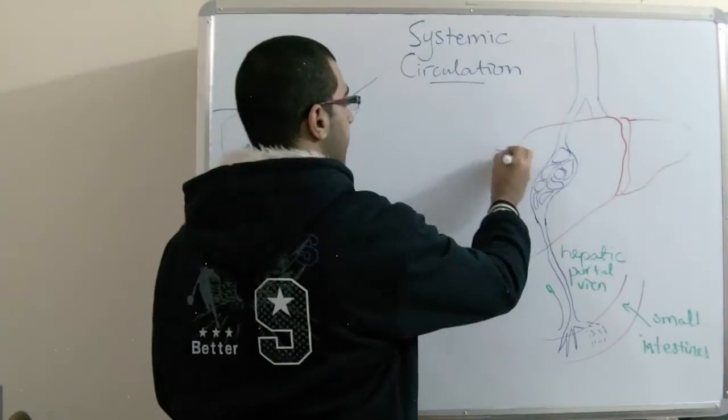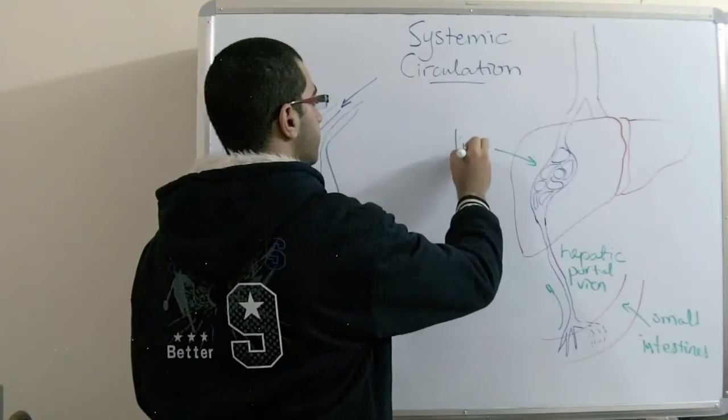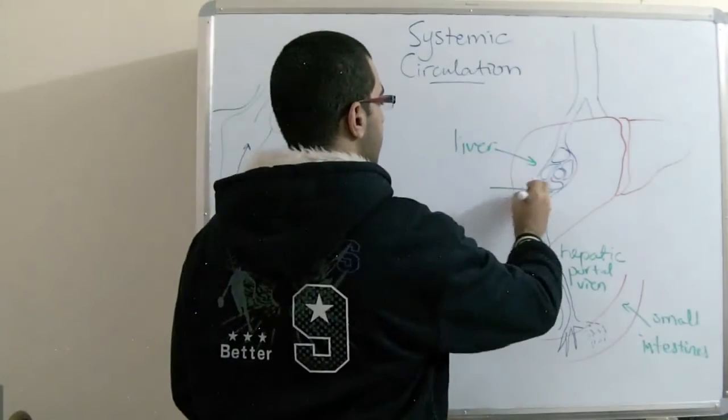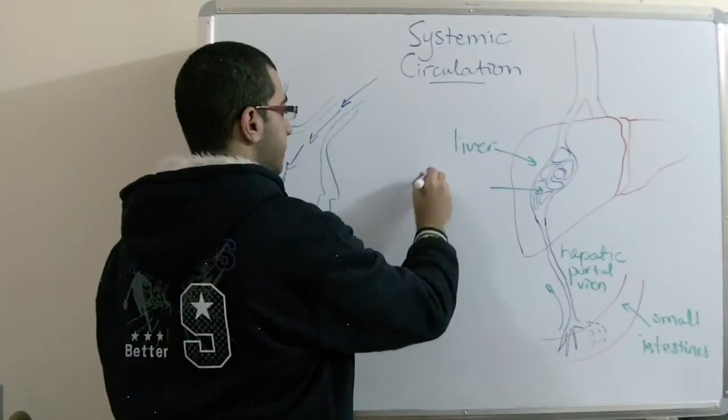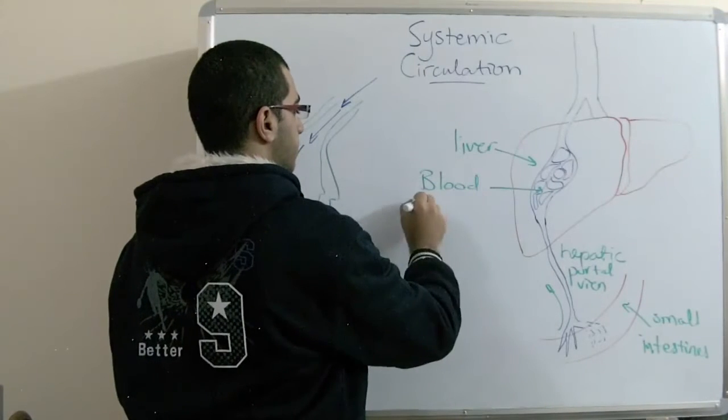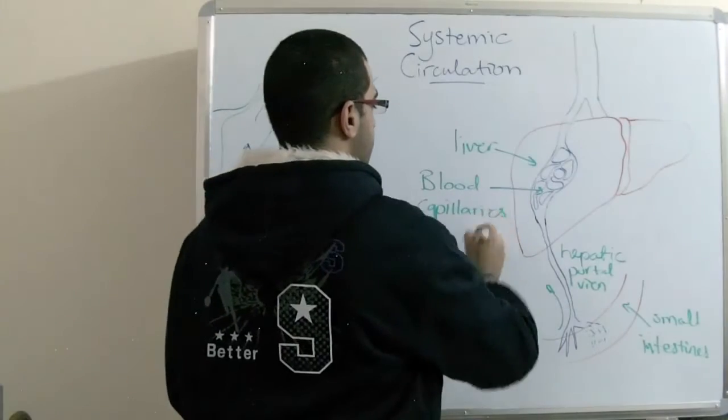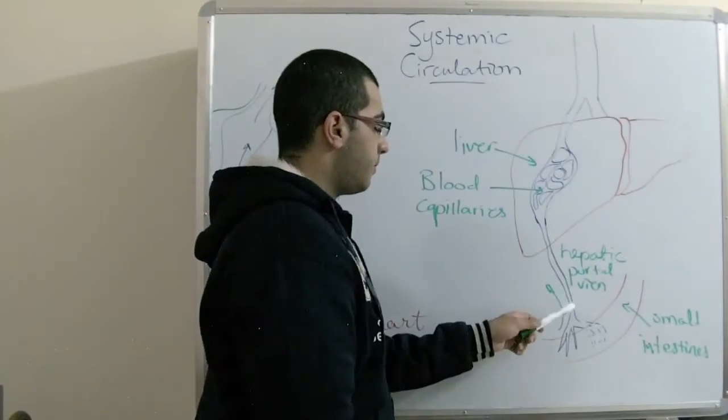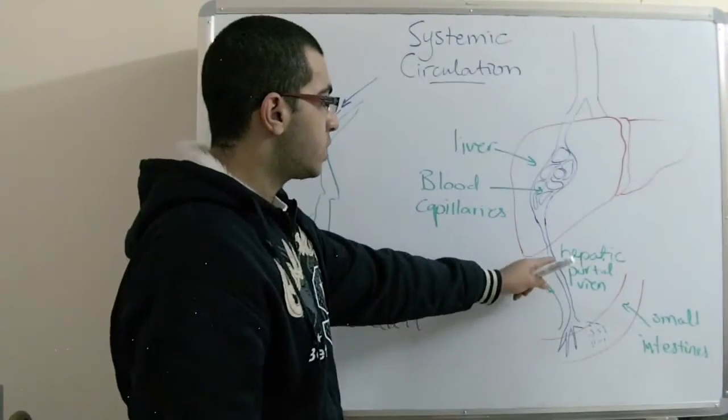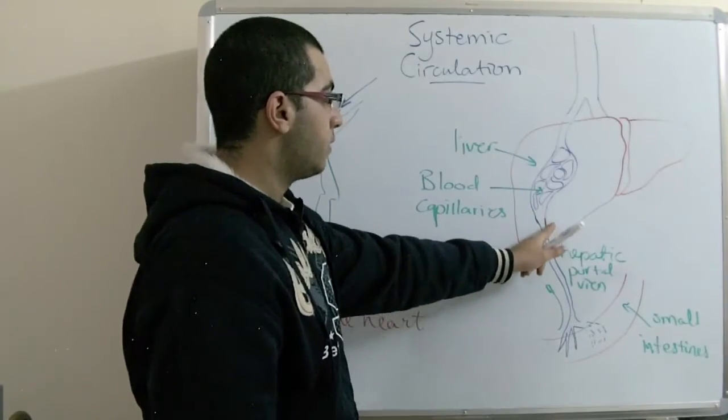This is the liver, and these are blood capillaries. So the food contents carried by the blood, which moves through the hepatic portal vein and enters through the liver, are analyzed.